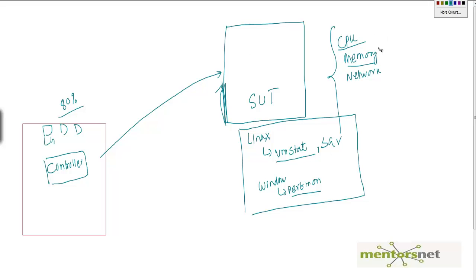Keep track of all these metrics so that you can later correlate them — we will see in the analysis session how we can correlate all this. However, in some cases what I do is: I run the controller, but sometimes the controller may not have the right kind of access to all these machines. So what I do is run a shell script or a bat script on the system under test to capture all those different kinds of operating system metrics that I am interested in.